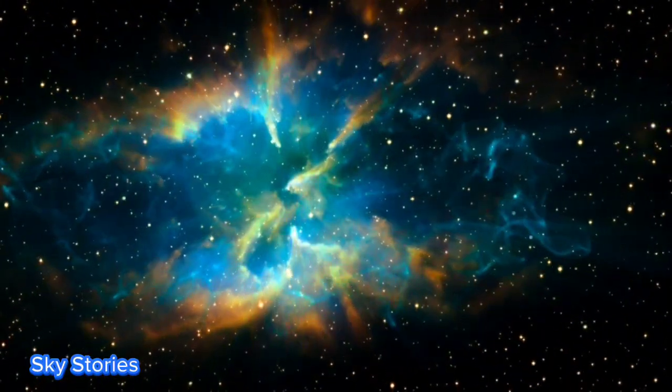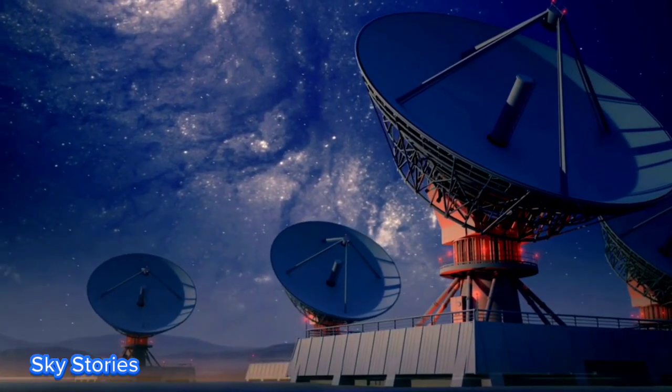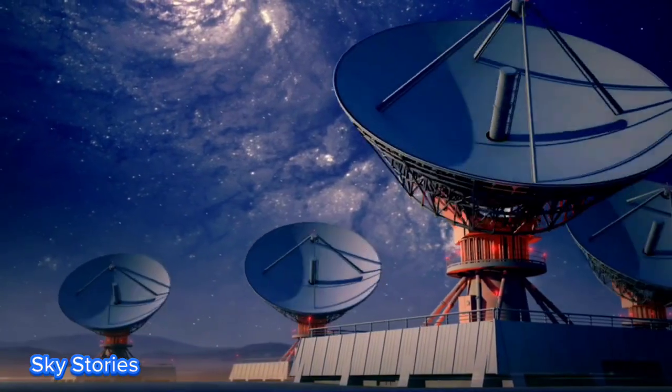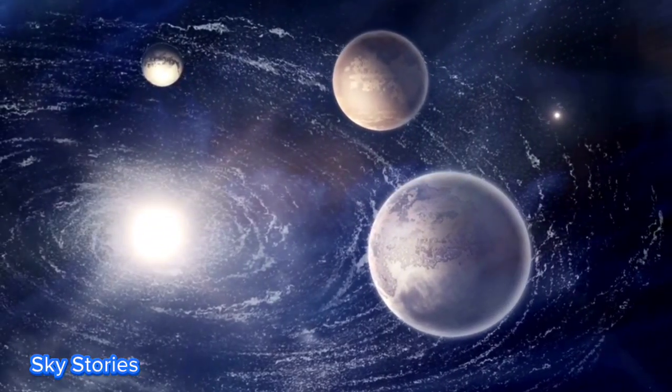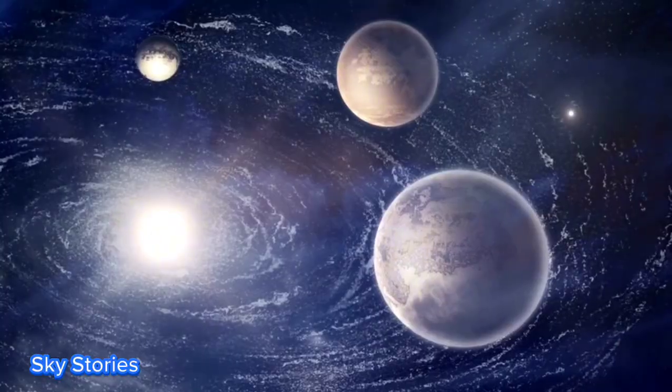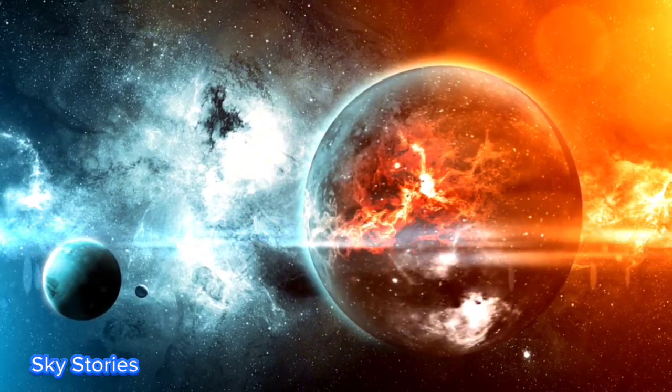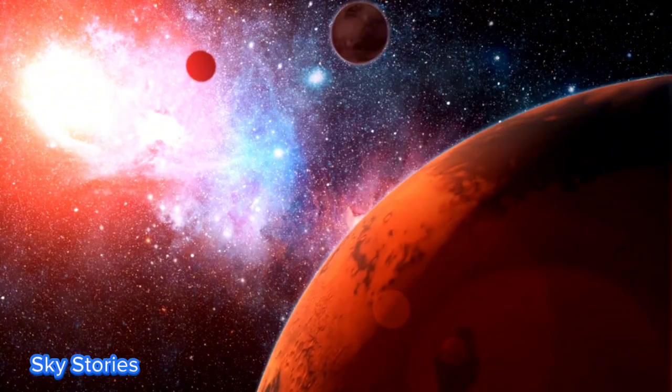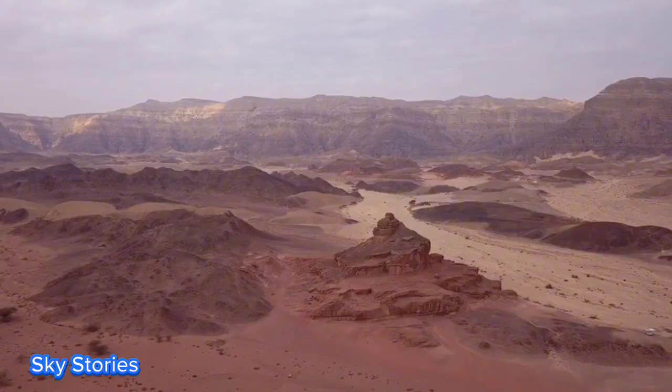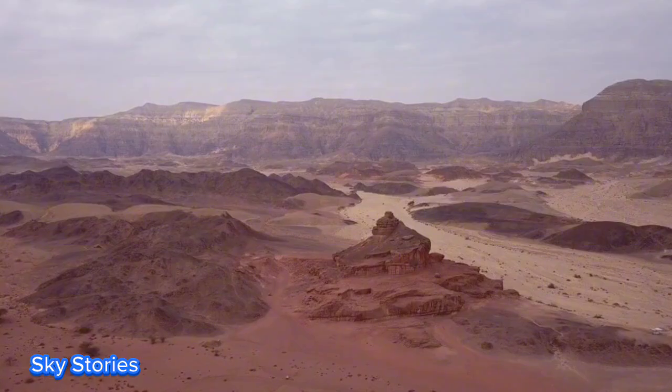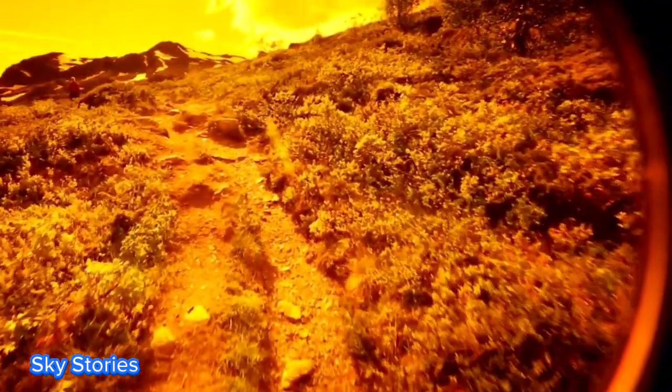But that's not all. There are also hot Jupiters, gas giants that orbit incredibly close to their host star. They exist in a scorching environment with temperatures high enough to melt metal. Imagine being able to observe such a planet up close, with its violent storms and extreme heat. In addition to gas giants, there are also Neptunian exoplanets, which are similar in size to Uranus and Neptune. Among these are hot Neptunes and mini-Neptunes, which are smaller and closer to their host stars than their gas giant cousins. These planets are often shrouded in mystery, making their atmospheres difficult to study from afar.